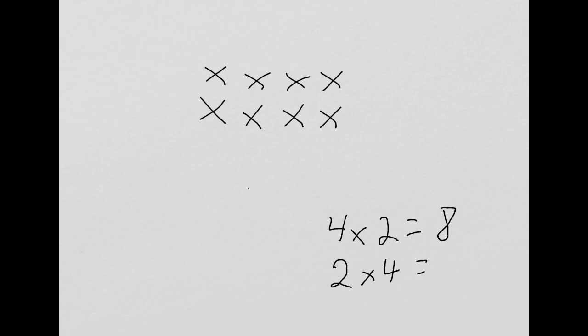So, let's skip count by 4s to demonstrate that. 4, 8. Practicing that group counting or skip counting by 4s is a very helpful strategy. So, again, there are still 8 objects in the array.